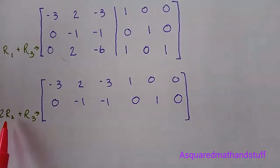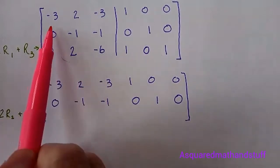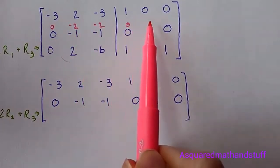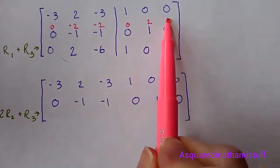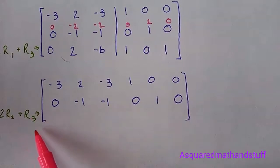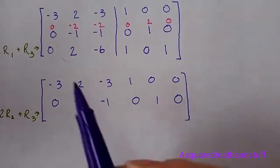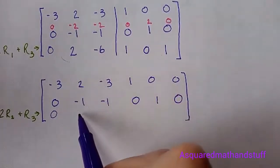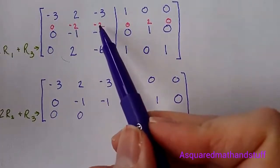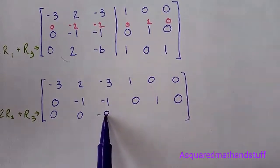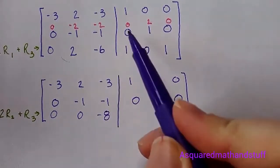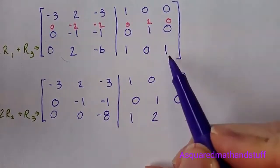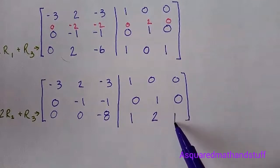Multiplying row 2 by 2, we will have 0, negative 2, negative 2, 0, 2, and 0. And then adding it to row 3, we have 0 plus 0. Negative 2 plus 2 gives us 0. Negative 2 plus negative 6 will give us negative 8. Then 0 plus 1, 2 plus 0, and 0 plus 1 gives us 1.